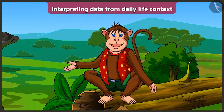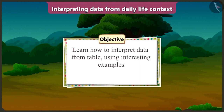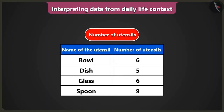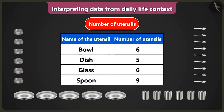Children, in this video we will learn how to interpret data from the table using interesting examples. I know how to fill the table. Now I will try to interpret data from the table. The data about utensils we have is given in this table. The data about names of the utensils is given in the first column and the data about the number of utensils is given in the second column.